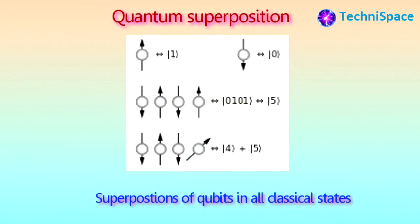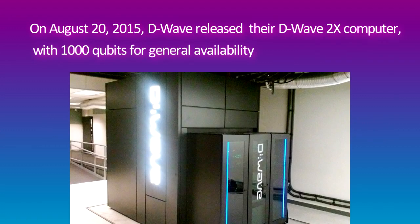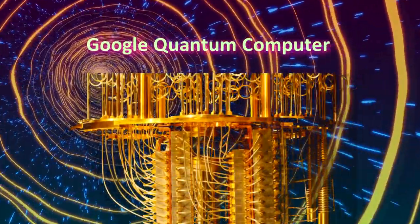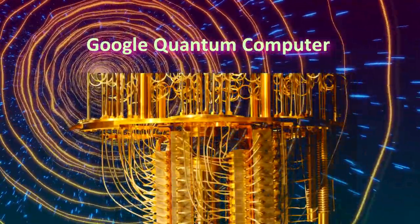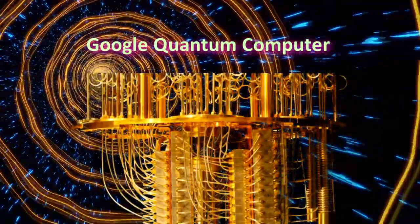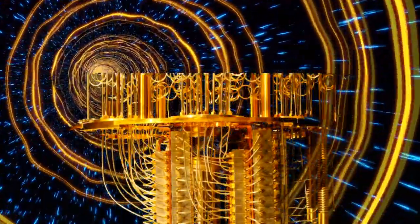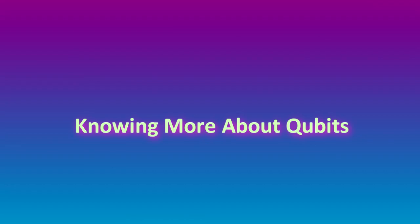Quantum computing is based on phenomena such as superposition and entanglement and the possibility of being in multiple states at the same time. How much faster is a quantum computer than a normal computer? As claimed by the D-Wave 2X machine, it is 100 million times faster than a regular computer chip. In late 2019, Google claimed that it had managed to solve a problem within just 200 seconds using a quantum computer — a task that would take 10,000 years for the world's fastest supercomputer.